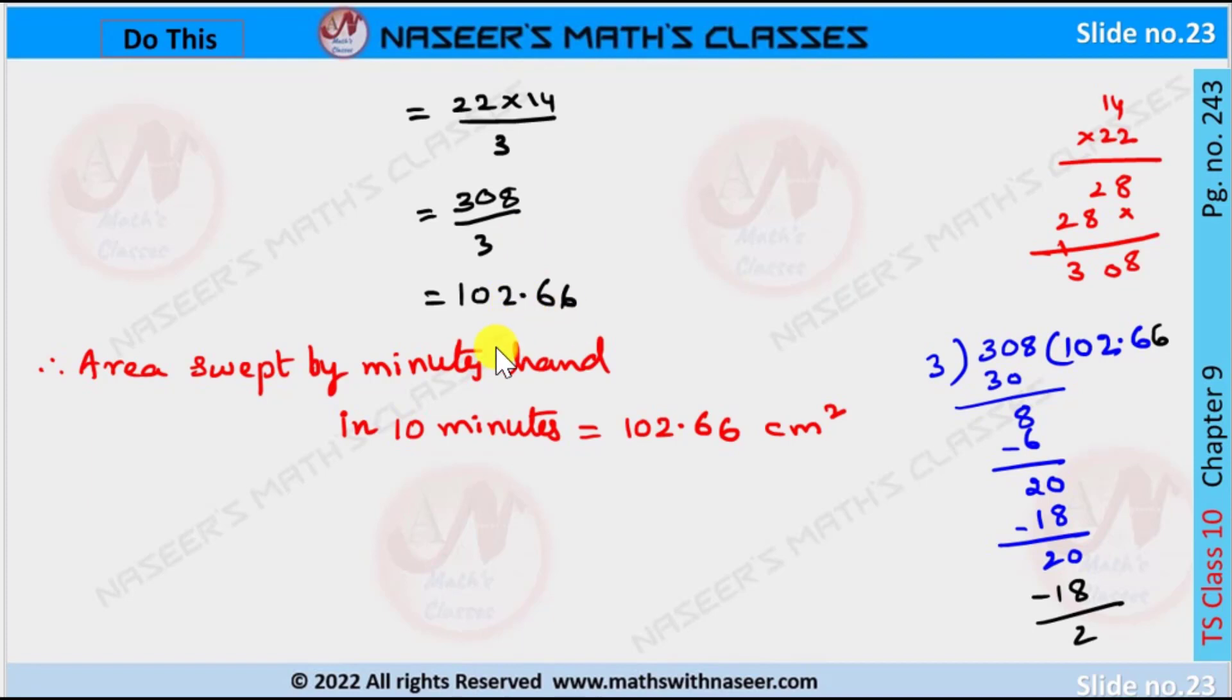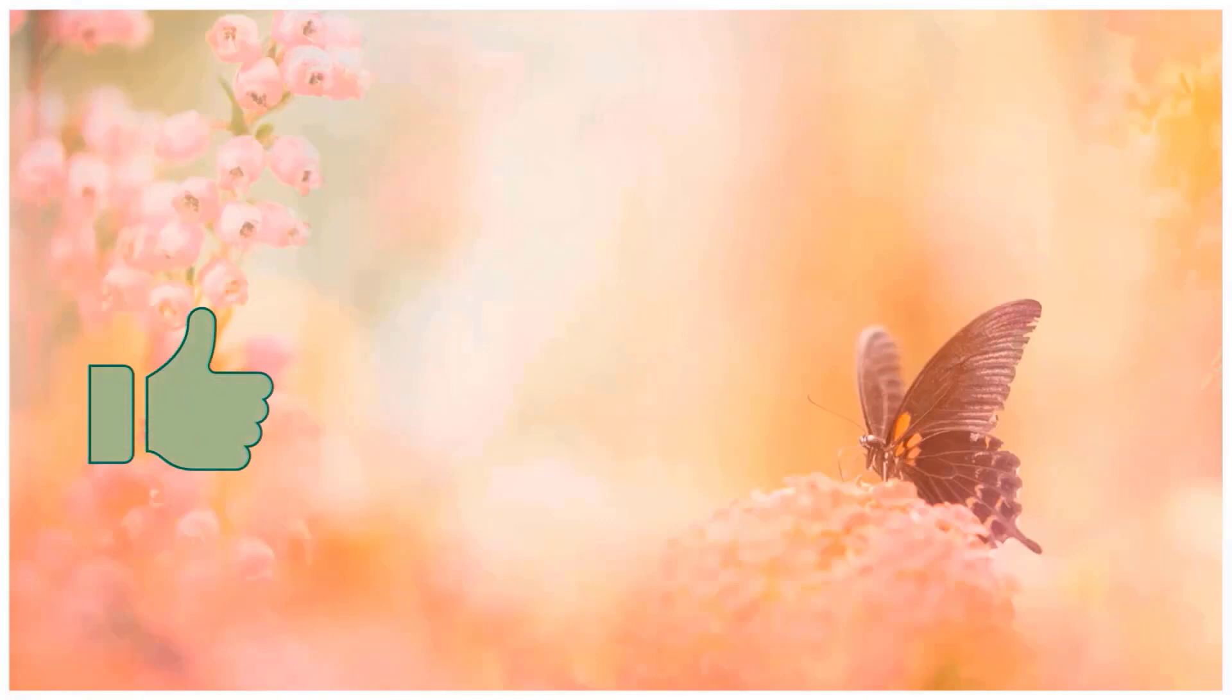Therefore, the area swept by minute hand in 10 minutes is equal to 102.66 centimeter square. Please like, share, and subscribe our channel for latest updates by pressing the bell icon.